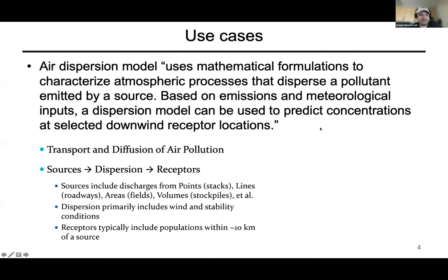What do you use air dispersion models like AERMOD for? They are mathematical formulations that characterize atmospheric processes that disperse a pollutant emitted by a source. They include emissions and meteorological input and can predict concentrations at selected downwind receptor sites — some XYZ coordinate point. So you have your sources, then the dispersion model, then the receptors. I emphasized point sources earlier, but there are versions that can be applied for non-point sources as well. The receptors are typically fairly close to the source — within about 50 kilometers in most AERMOD cases.